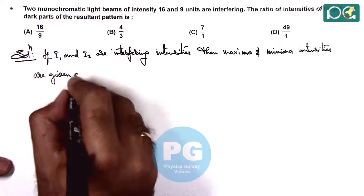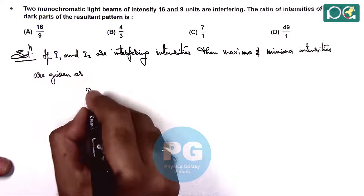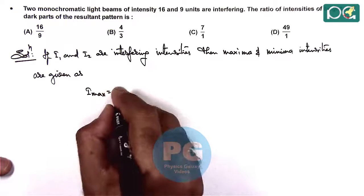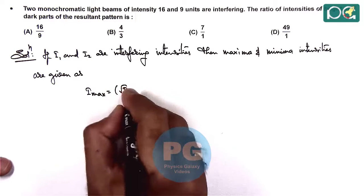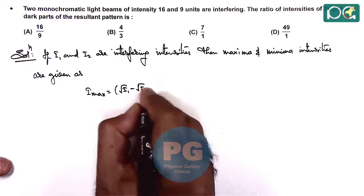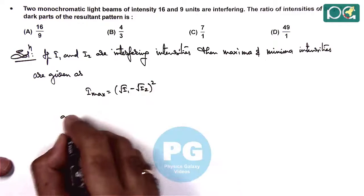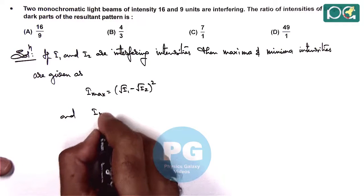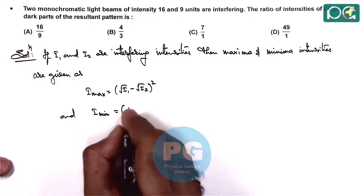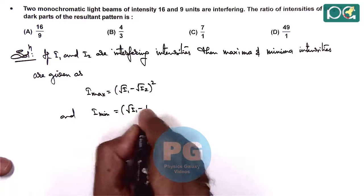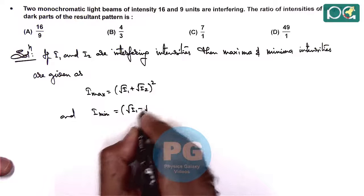The maxima and minima intensities are given as: Imax = (√I1 + √I2)² and Imin = (√I1 - √I2)².